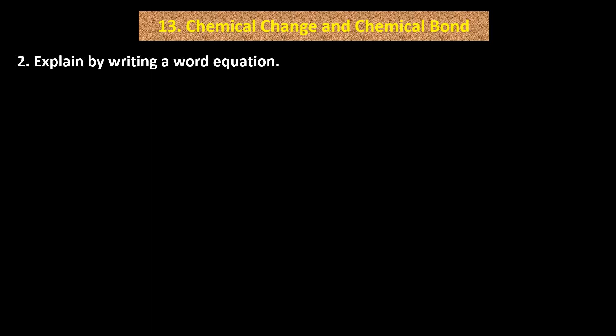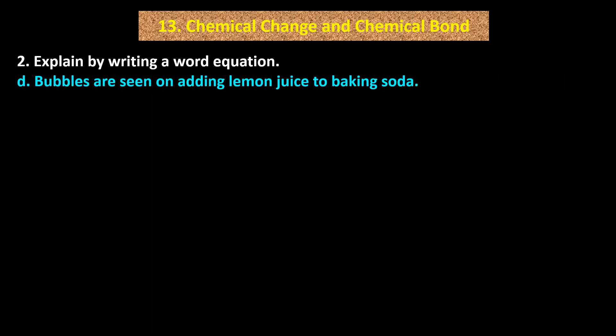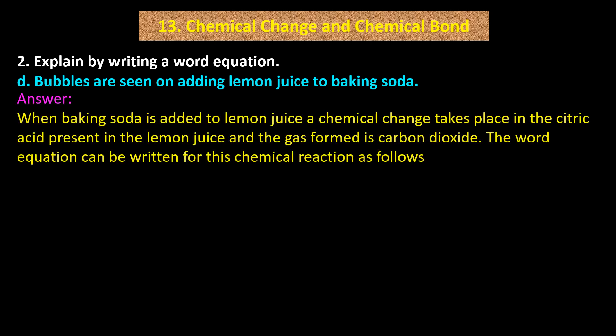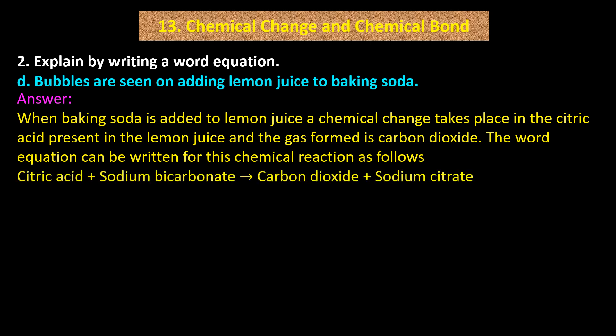Chemical equation: CaCO3 + HCl → CaCl2 + CO2 + H2O. D: Bubbles are seen on adding lemon juice to baking soda. Answer: A chemical change takes place in the citric acid present in the lemon juice and the gas formed is carbon dioxide. Word equation: citric acid + sodium bicarbonate → carbon dioxide + sodium citrate.